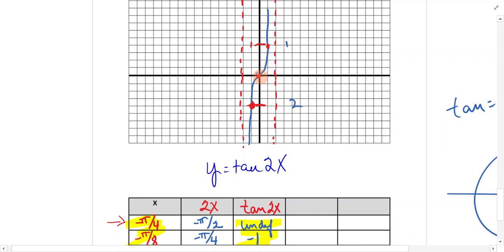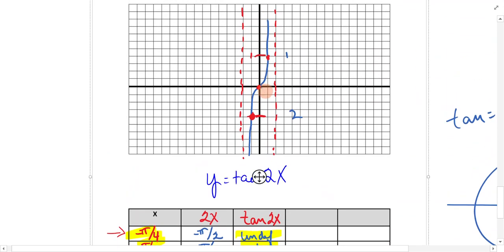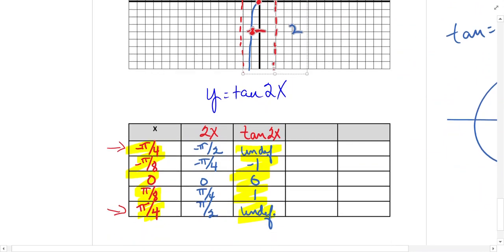At negative pi over 4, we're undefined. At negative pi over 8, we're at negative 1. At 0, 0, we're at 0, so we put a dot there. And then at pi over 8, we're at 1.